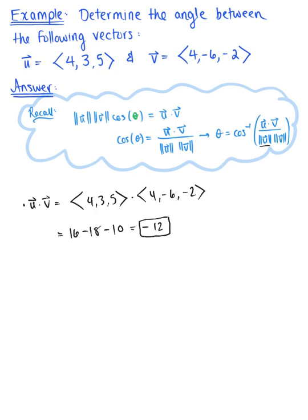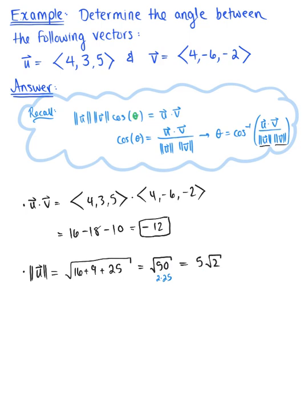Now let's find the magnitude of vector u and the magnitude of vector v. Starting with the magnitude of vector u, using the distance formula: we have the square root of 16 plus 9 plus 25, which is the square root of 50. Since 50 equals 2 times 25, this simplifies to 5 times the square root of 2.